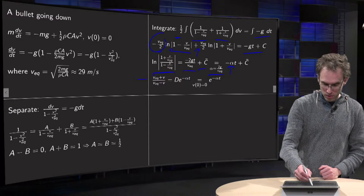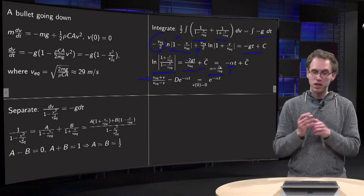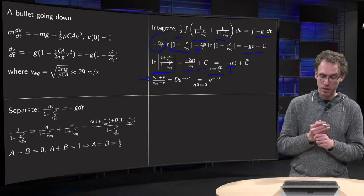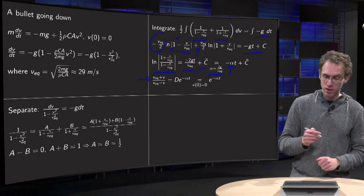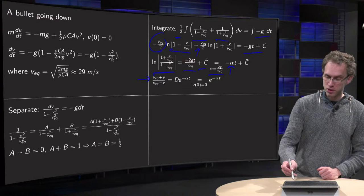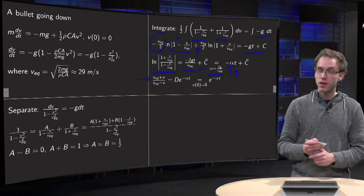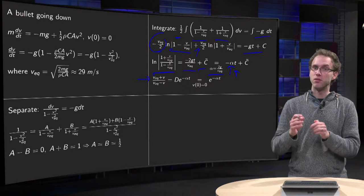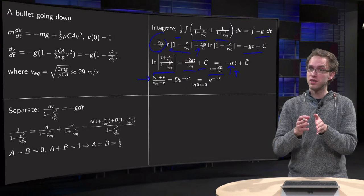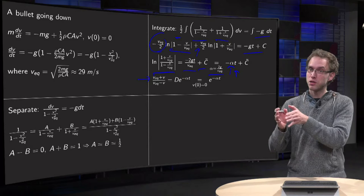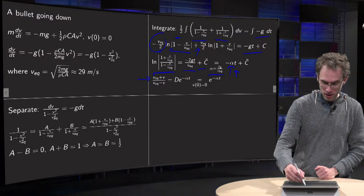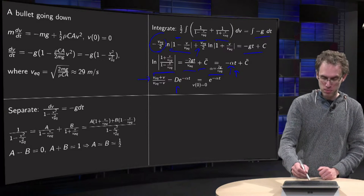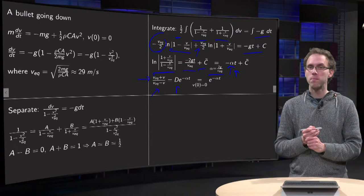Taking exponentials, we get (1 plus v/v_equilibrium) over (1 minus v/v_equilibrium) equals the exponential of (minus alpha·t plus c̃), which equals d·e^(minus alpha·t), where d equals e^(c̃) is a new constant. You can simplify the left-hand side a bit as well.